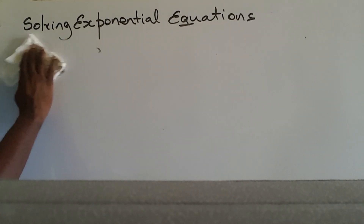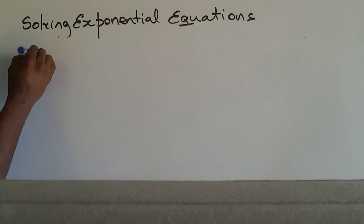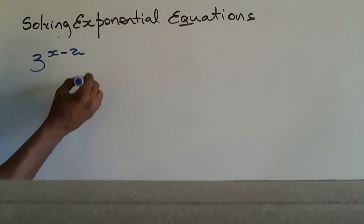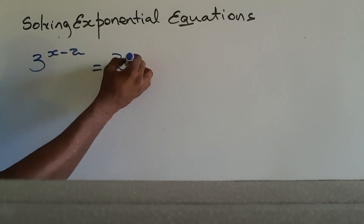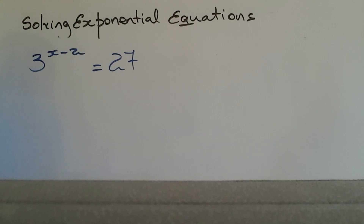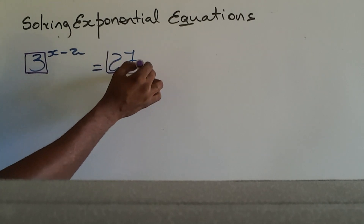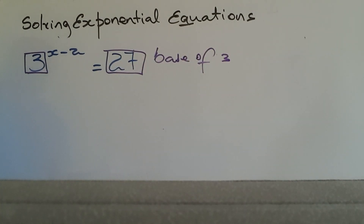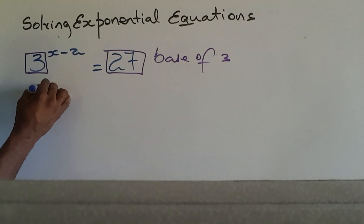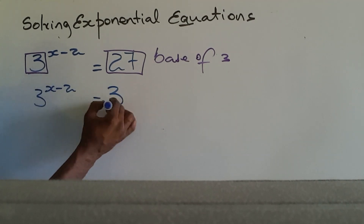Now let's look at another situation. What if we see 3 raised to the X minus 2 equals 27? This problem starts with a base of 3, so I have to write 27 using a base of 3. So 3 raised to the X minus 2 is equal to 3 to the third.